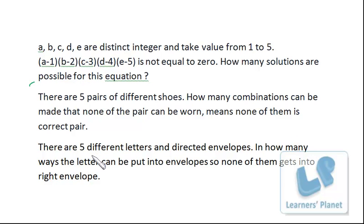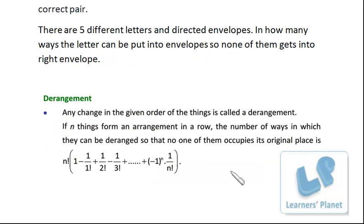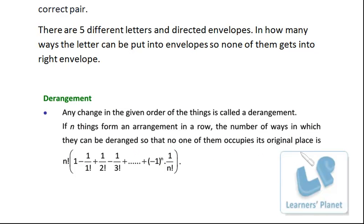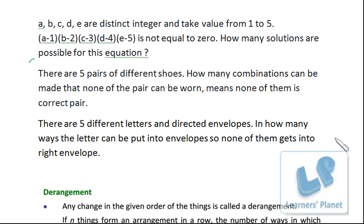You know the classic envelope problem but you don't recognize it in the other forms because you are not conceptually clear with derangement. Now, what exactly is derangement? Any change in the given order of things is called a derangement. If n things form an arrangement in a row, the number of ways in which they can be deranged so that no one of them occupies its original place is the derangement count.